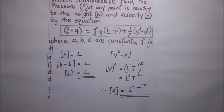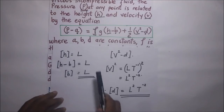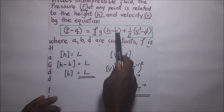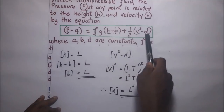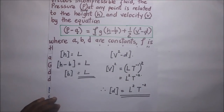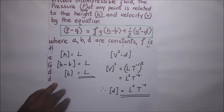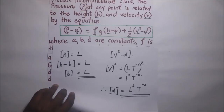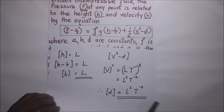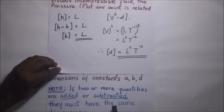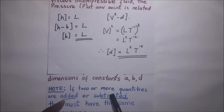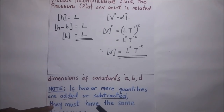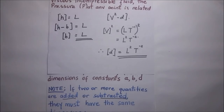That is how we find the dimensions of constants A, B, and D — all arising from the fundamental rule that quantities which are added or subtracted must have the same dimensions.